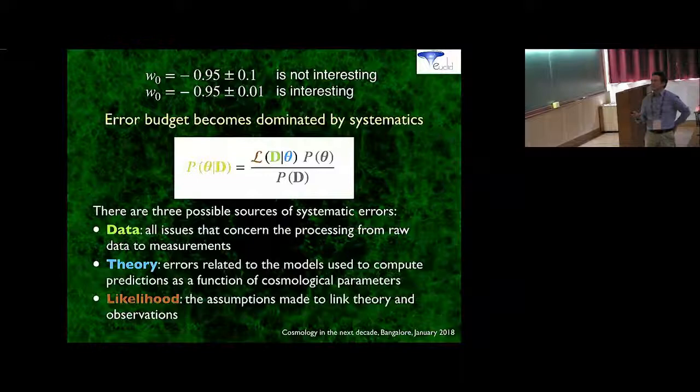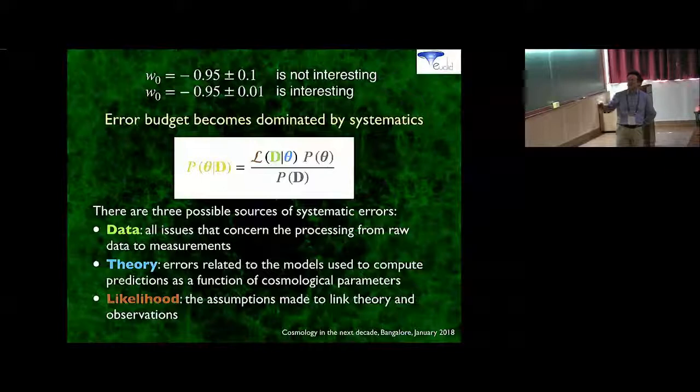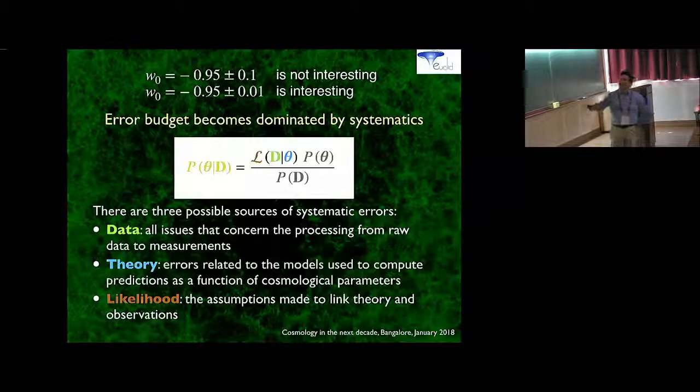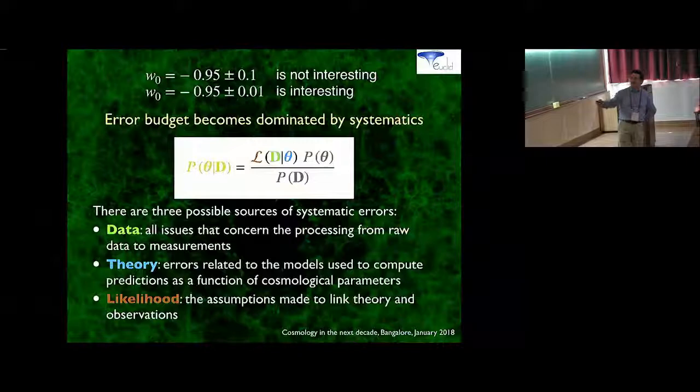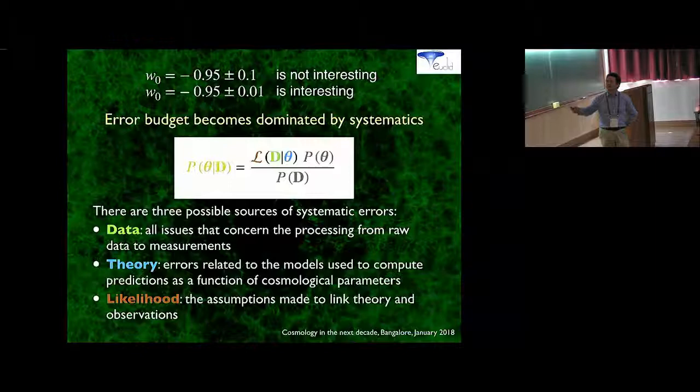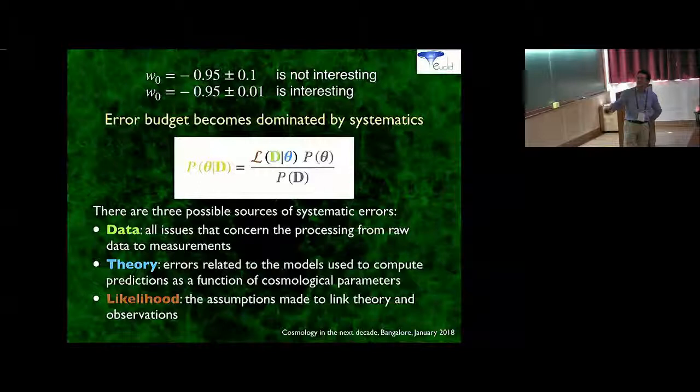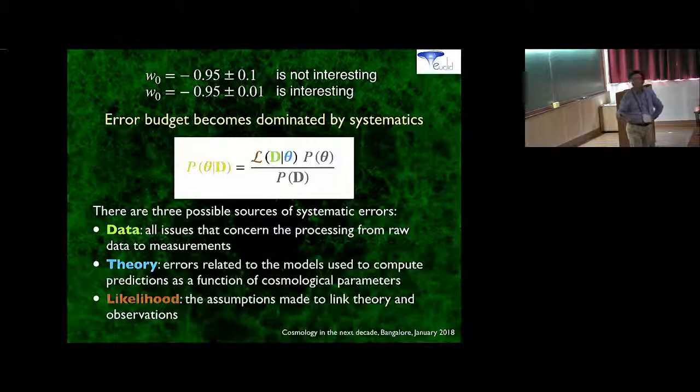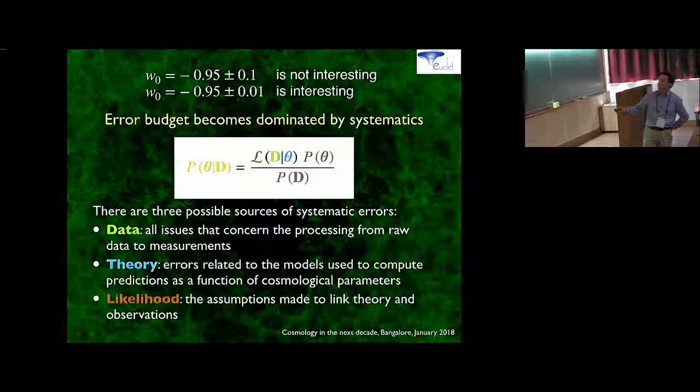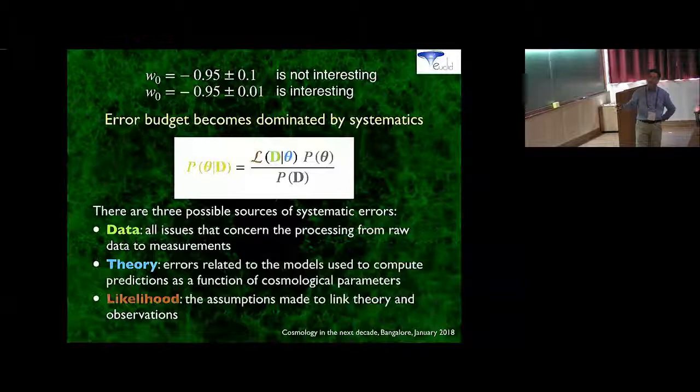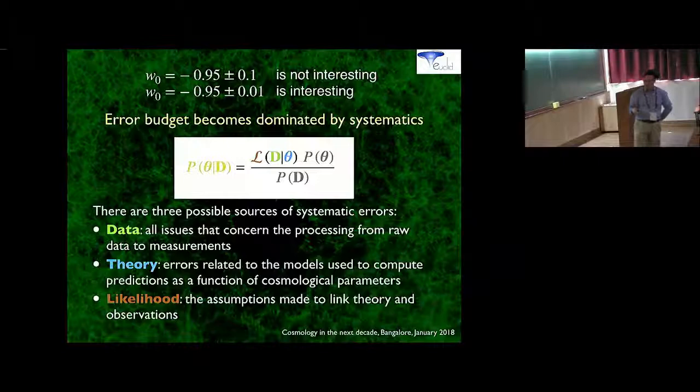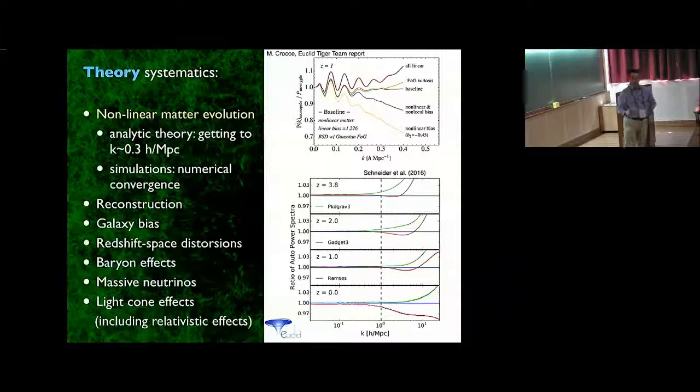Suppose that we measure W0 minus 0.95. If this is minus 0.95 plus minus 0.1, this is not very interesting. But if it is plus minus 0.01, then this is interesting. Because the reality is so similar to the Lambda CDM model, if you want to find some deviation, the error bar becomes the important thing. The error budget will be dominated by systematics.